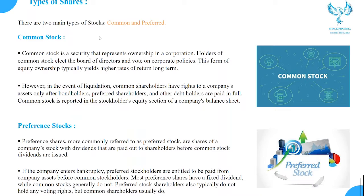There are two main types of shares: common and preferred. Common stock is a security that represents ownership in a corporation. Holders of common stock elect the board of directors and vote on corporate policies. This form of equity ownership typically yields higher rates of return in the long term. However, in the event of liquidation, common shareholders have rights to the company's assets only after bond holders, preferred shareholders, and other debt holders are paid in full.